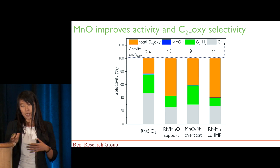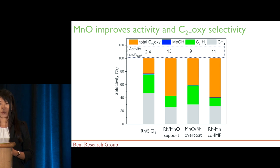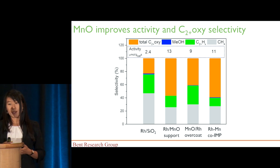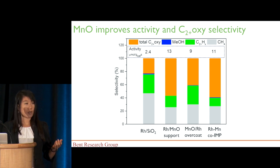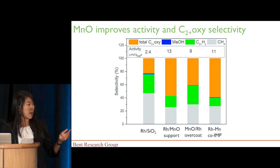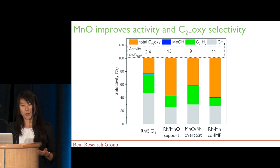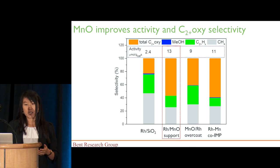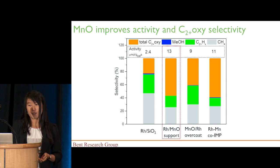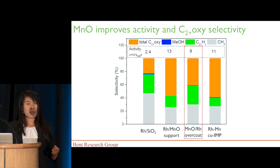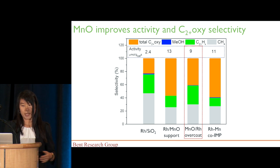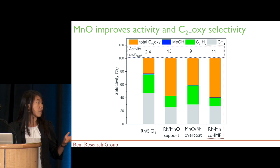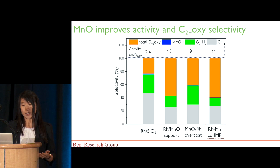We took all these different types of catalysts to test in the syngas conversion reaction. This diagram shows the selectivity going into different products. Our desirable higher oxygenate product is shown in orange, and the methane shown in gray is the most competing byproduct, which we want to minimize. With manganese oxide ALD as a support layer, it achieved the highest production of higher oxygenates, and especially the selectivity was significantly improved. Using manganese oxide as an overcoat layer was not as effective as the support layer — the selectivity improvement was much less. We also observed that the co-impregnation catalyst gave also pretty good activity and selectivity.